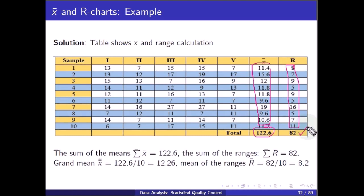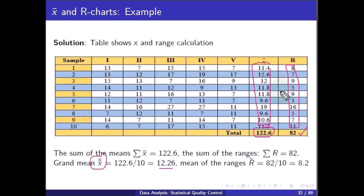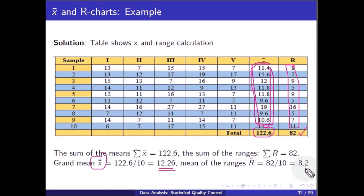The grand mean (x-double-bar) = 122.6 / 10 = 12.26. The mean of ranges (R-bar) = 82 / 10 = 8.2.